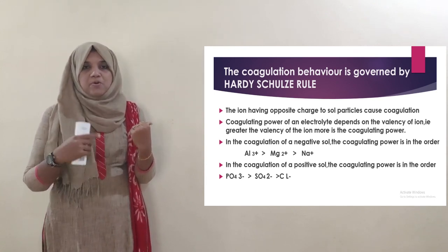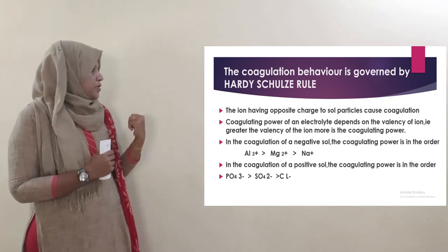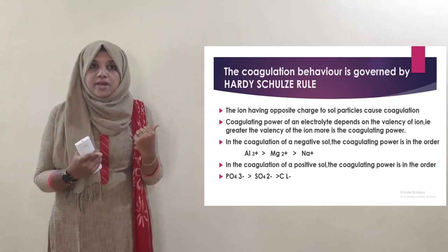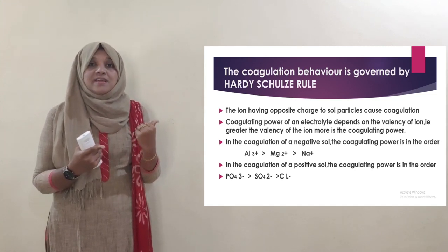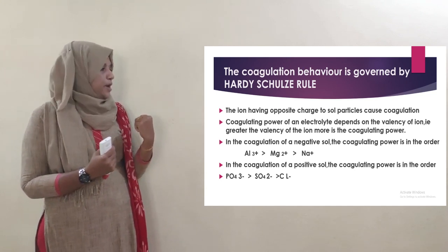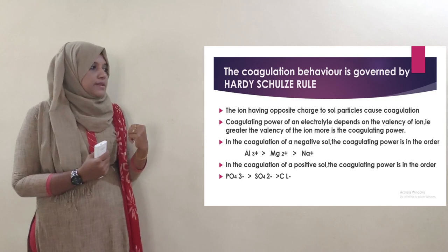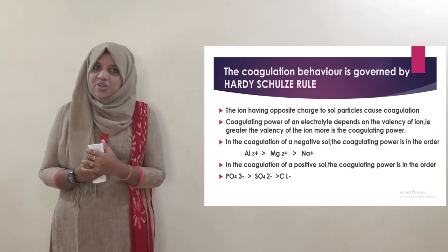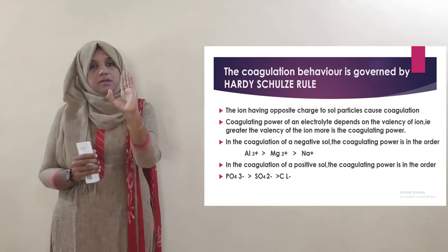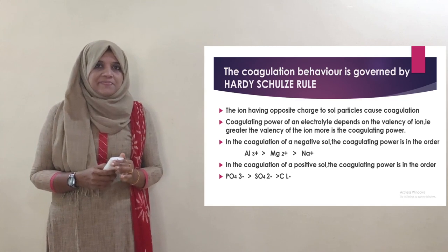For coagulation of a positive sol, because of negative ions, the order of coagulating power is: PO₄³⁻ > SO₄²⁻ > Cl⁻. This is the Hardy-Schulze rule order. For coagulation of a negative sol, the order of positive ions is: Al³⁺ > Ca²⁺ > Na⁺.